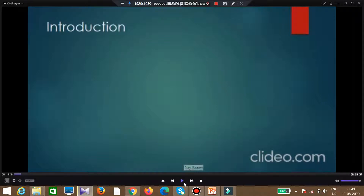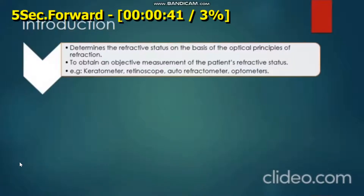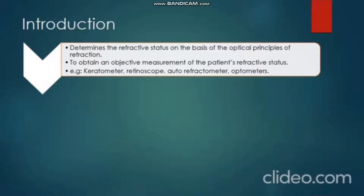I'm going to discuss cycloplegic refraction today. First, the introduction: we have to do objective refraction, which determines the refractive status on the basis of the optical principle of refraction. It is done to obtain an objective measurement of the patient's refractive status. Examples include keratometer, retinoscope, refractometer, and optometers, which are used to measure the refractive status of the eye.